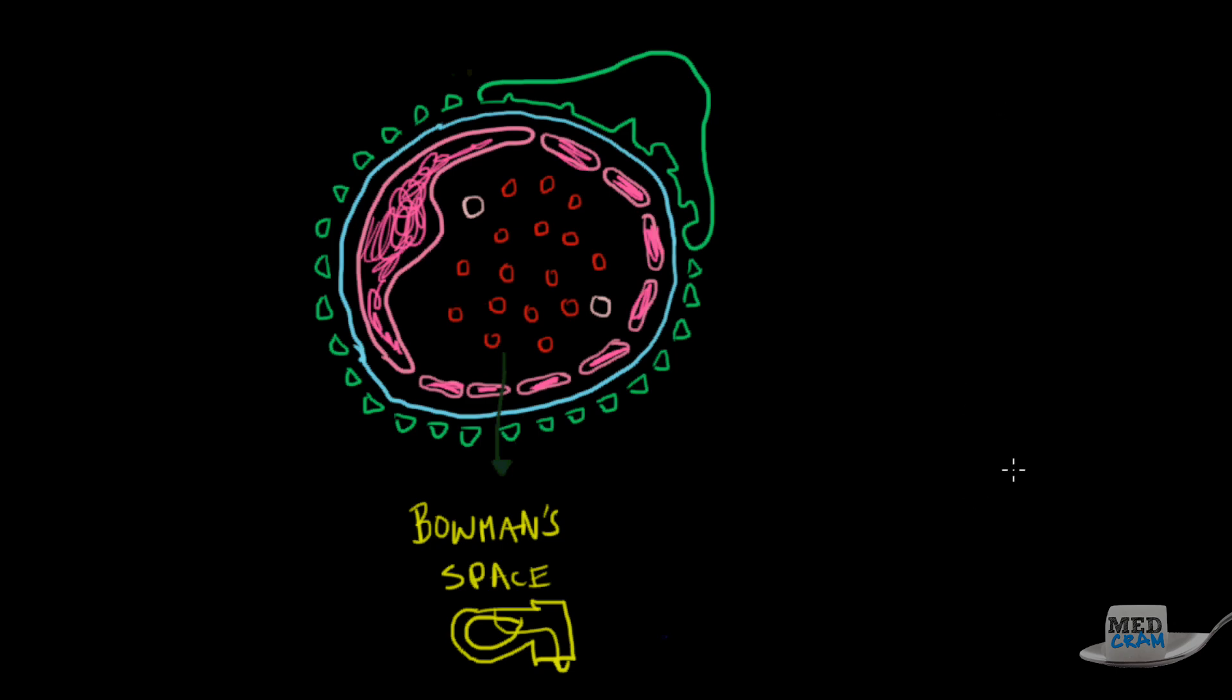If you remember the schematic of what a glomerulus looks like, you've got vasculature that comes in and then leaves, and you've got a Bowman's capsule here that picks that up. That gets picked up and goes into the proximal convoluted tubule, down the descending loop of Henle, up the ascending loop, into the distal convoluted tubule, and then into the collecting ducts, and then out again to the toilet.